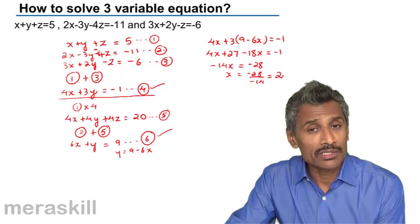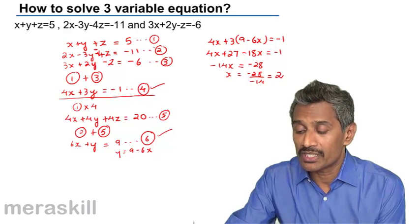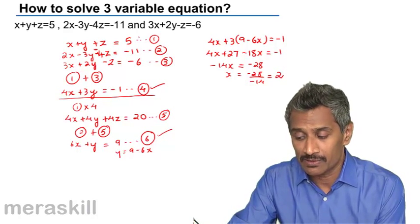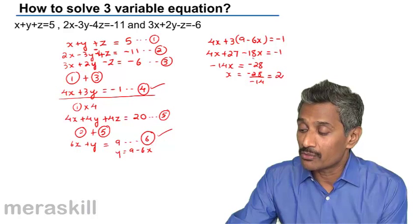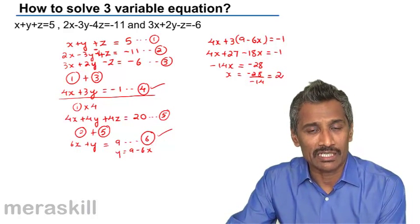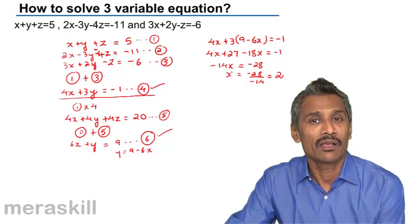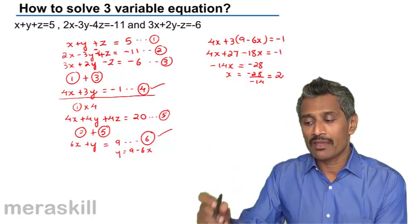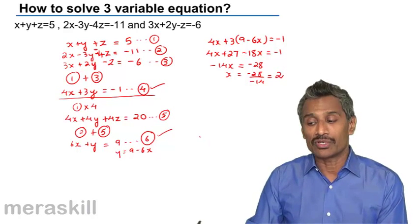So to cut the long story short, you take pairs of equations and eliminate one of the variables so that you get two equations in two variables. Solve them like a pair of simultaneous equations in two variables and get the values of x and y. This is how we solve equations in three variables.